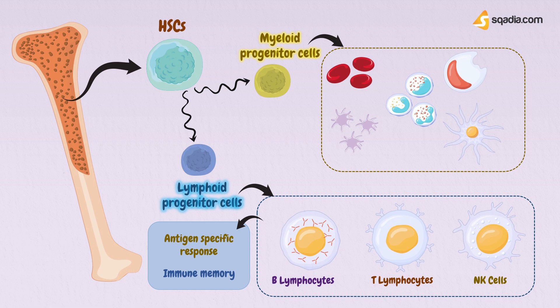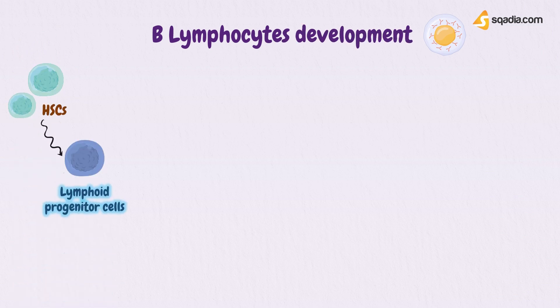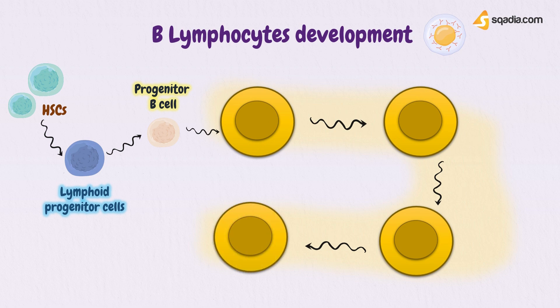Here, our concern is B lymphocyte development only. Lymphoid progenitor cells undergo differentiation and get converted into progenitor B cells. The differentiation of B lymphocytes in the bone marrow can be explained by looking at the expression of different molecules by the developing B cell. One of the first signs that a cell is committed to the B cell lineage is the expression of a surface protein known as CD19.